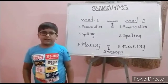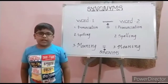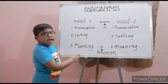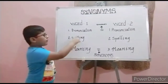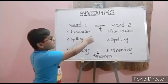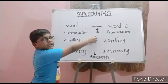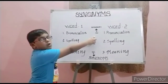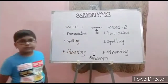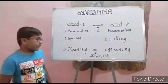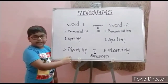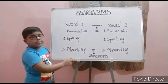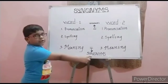In the English language, every word has three parts: pronunciation, spelling, and meaning. If the pronunciation is the same but spelling and meaning are different, they are called homophones. If the meaning is the same but spelling and pronunciation are different, they are called synonyms.